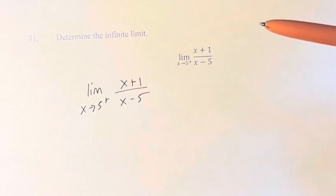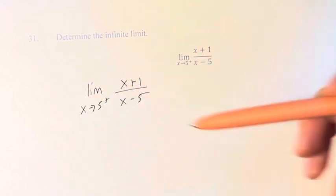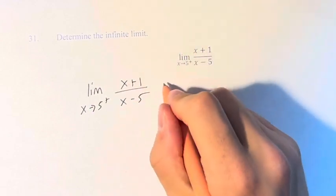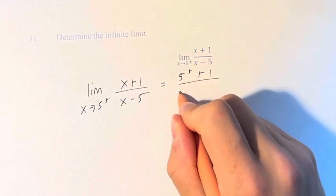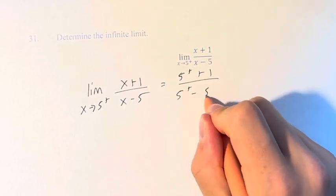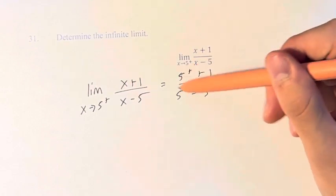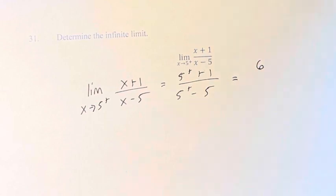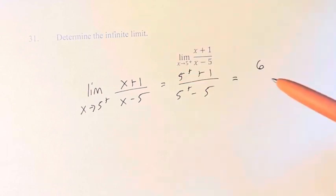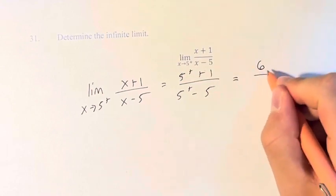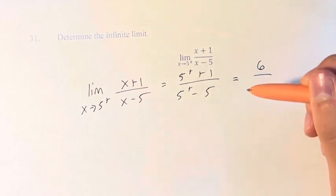So what we have to do is say, if we are plugging in 5 from the right into this function, what is that going to look like? It's helpful to literally just plug this in. So we have 5 from the right plus 1 over 5 from the right minus 5. As we approach 5, 5 plus 1 is just going to turn into 6. It doesn't really matter whether we're approaching from the right or the left — 6 is going to be basically the same, whether it's 6.0000001 or 5.999999.